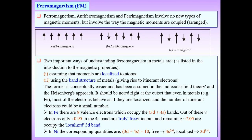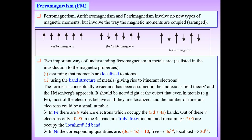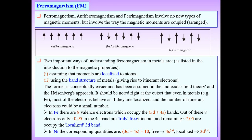Two important ways to understand ferromagnetism in metals are listed in the introduction to magnetic properties. The first assumes that the magnetic moments are localized to atoms. The second uses the band structure of the metal, giving rise to itinerant electrons.